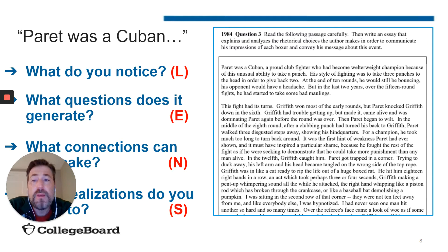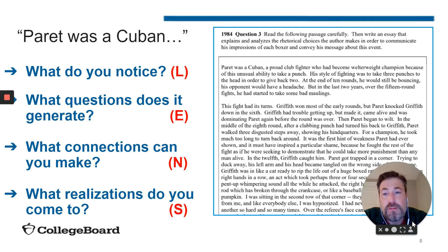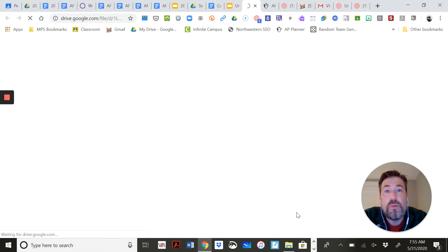Now that you've finished reading the passage and have your own notes, you have those first two steps: what did you notice, and what questions did it raise? Then I add to the experience and say: what connections can you make? This can be to personal experience, to outside text, or to other texts I've been assigning in class — I'm setting up connections I want them to see. And then what realizations do you come to? That usually happens after we start discussing — what do they realize now that they didn't know before, what do they learn from their peers, what did peers point out that they didn't see on their own?